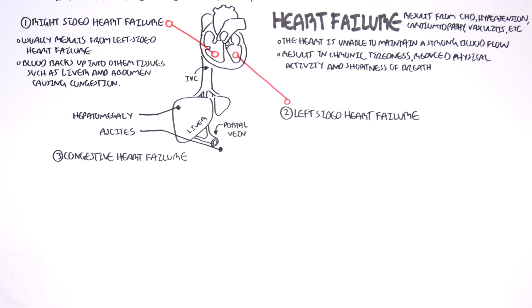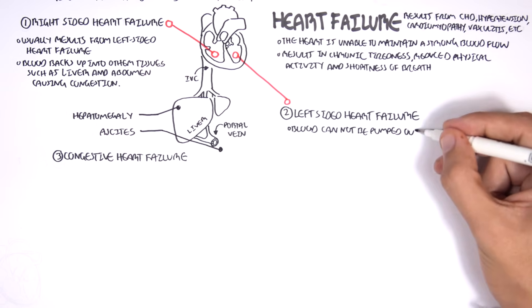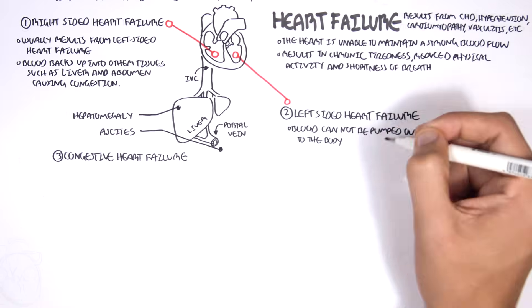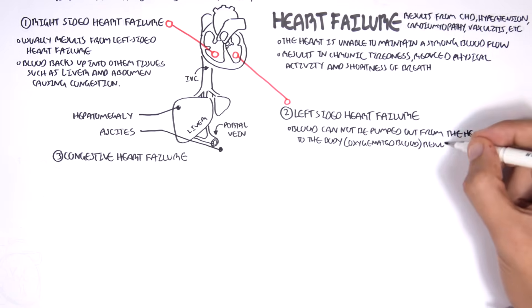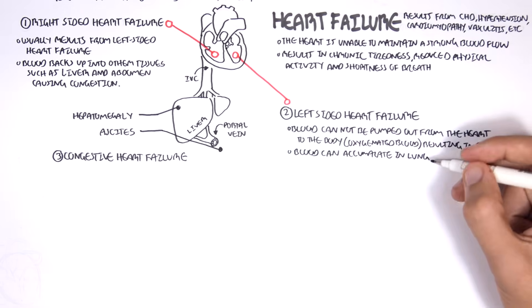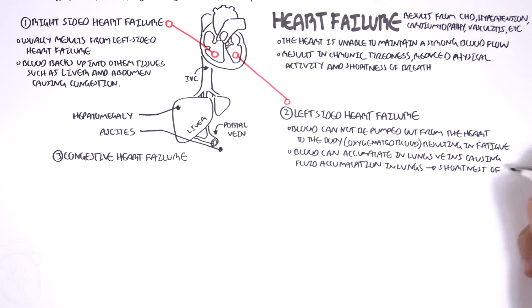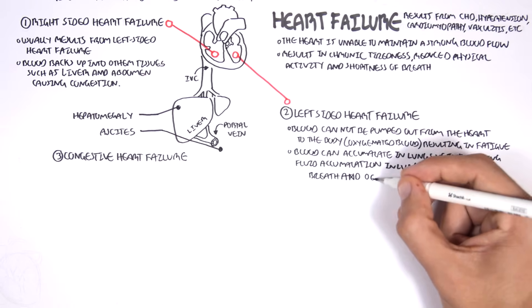In left-sided heart failure, oxygenated blood — because on the left side we have the left ventricle and left atrium, which contains the oxygenated blood from the lungs — cannot be pumped out from the heart to the rest of the body. Blood can backflow and accumulate in the pulmonary veins essentially, causing fluid accumulation in the lungs, leading to shortness of breath and pulmonary edema.